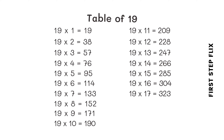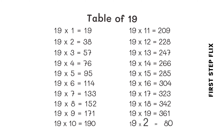19 eighteens are 342. 19 nineteens are 361. 19 twenties are 380.